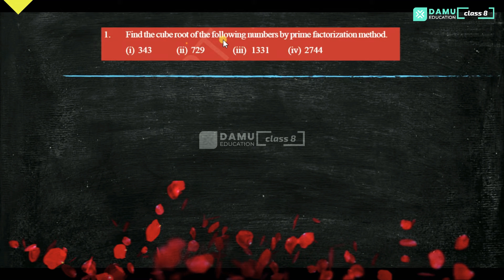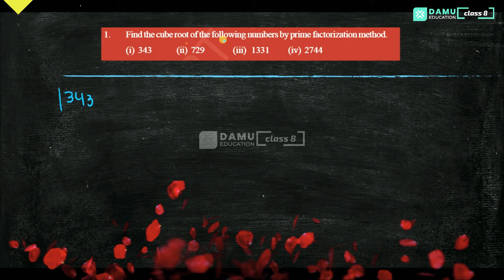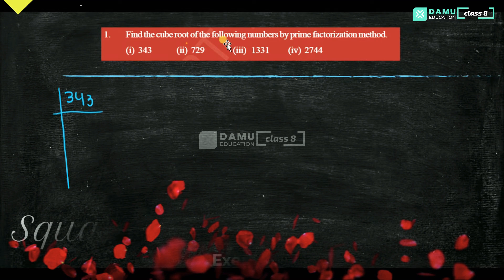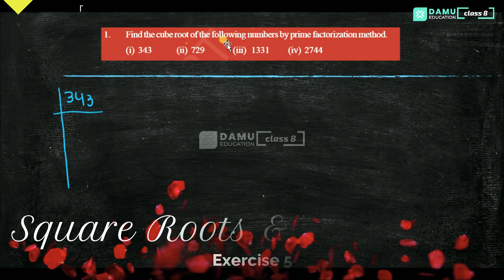In this module, we are going to discuss finding the cube root of the following numbers by prime factorization method. Let's take our first one: 343. Prime factorization method means you have to take only prime numbers. We'll start with 2 — not possible, because 3 is in the units place.